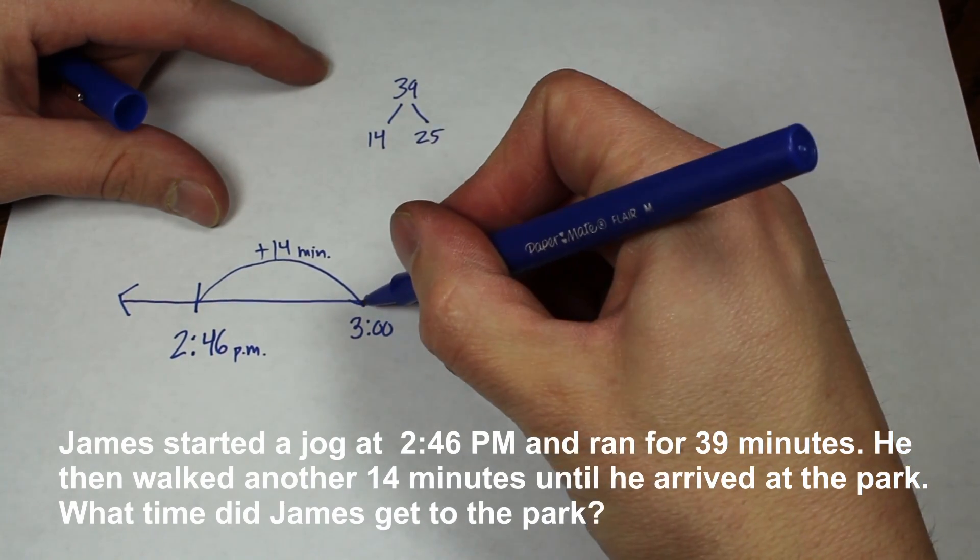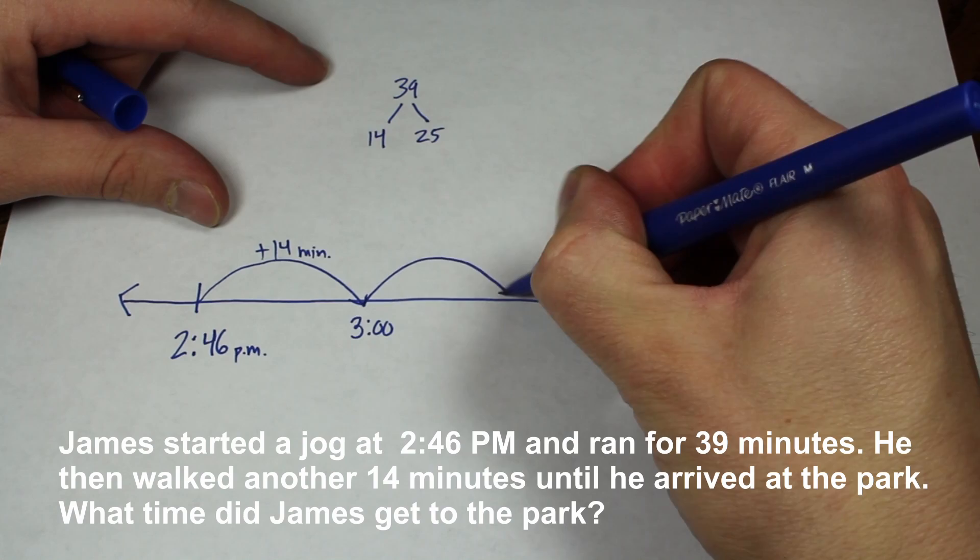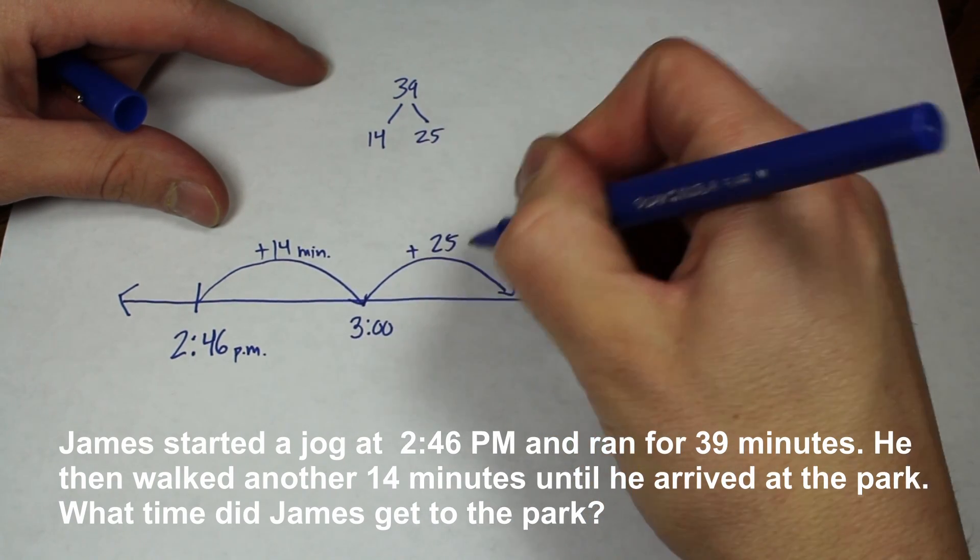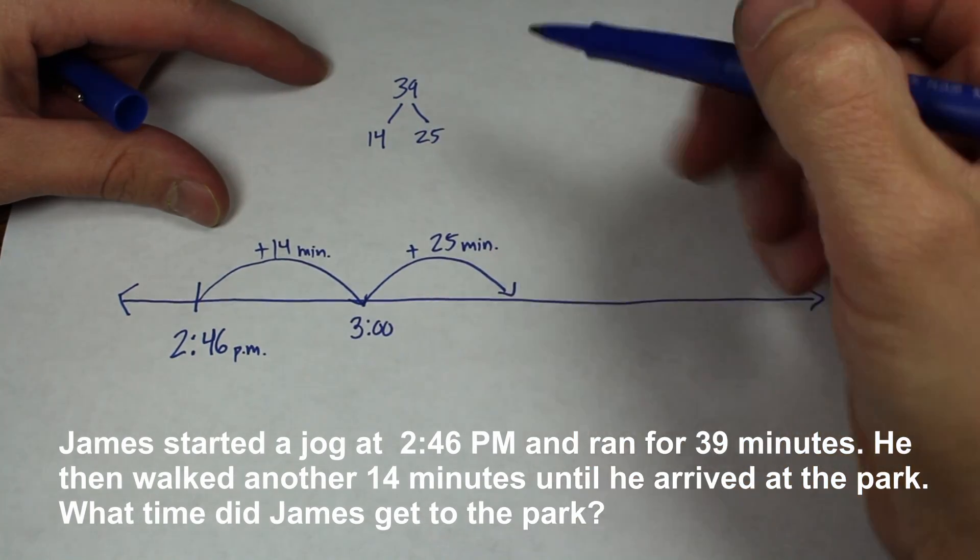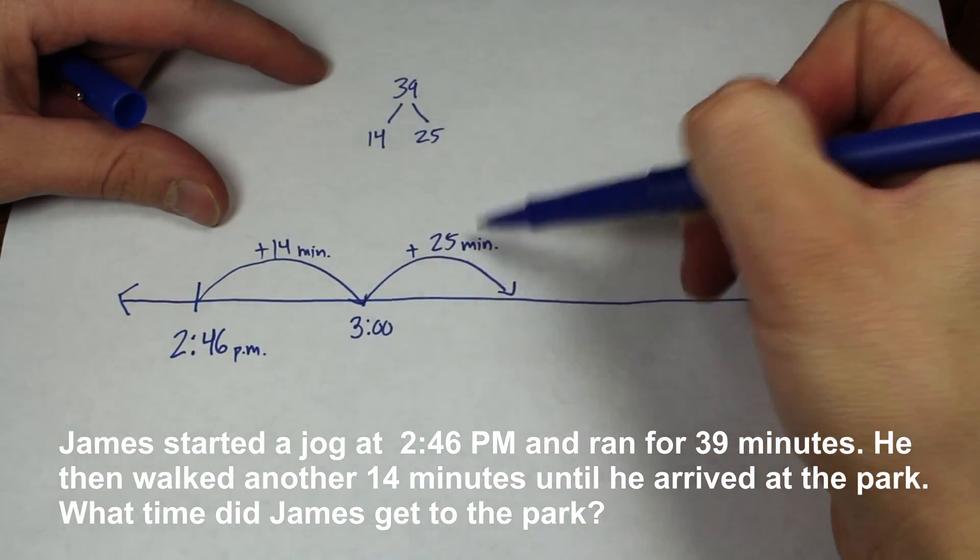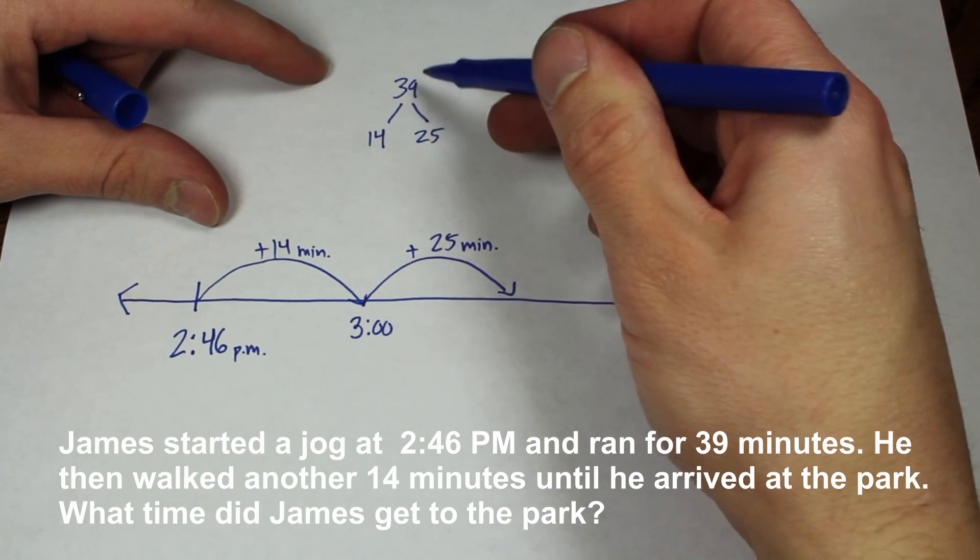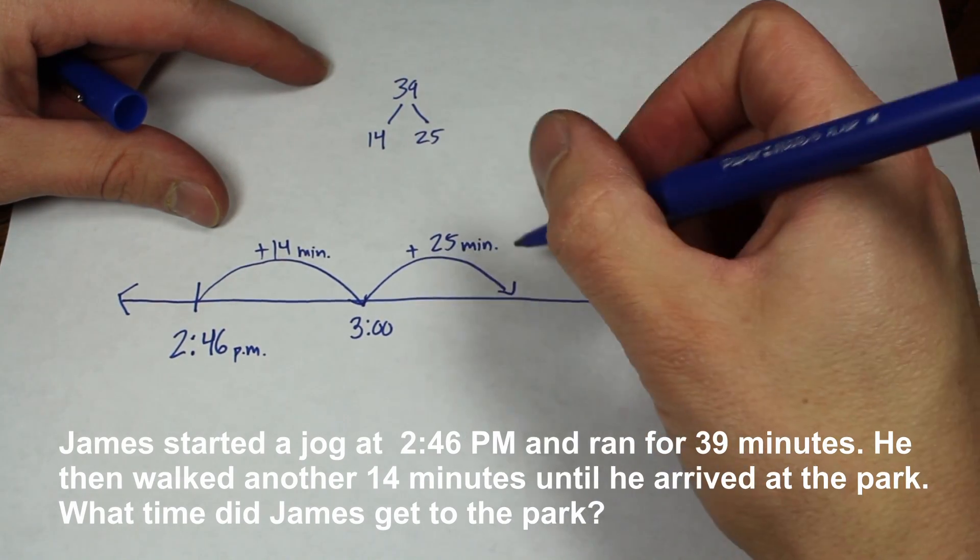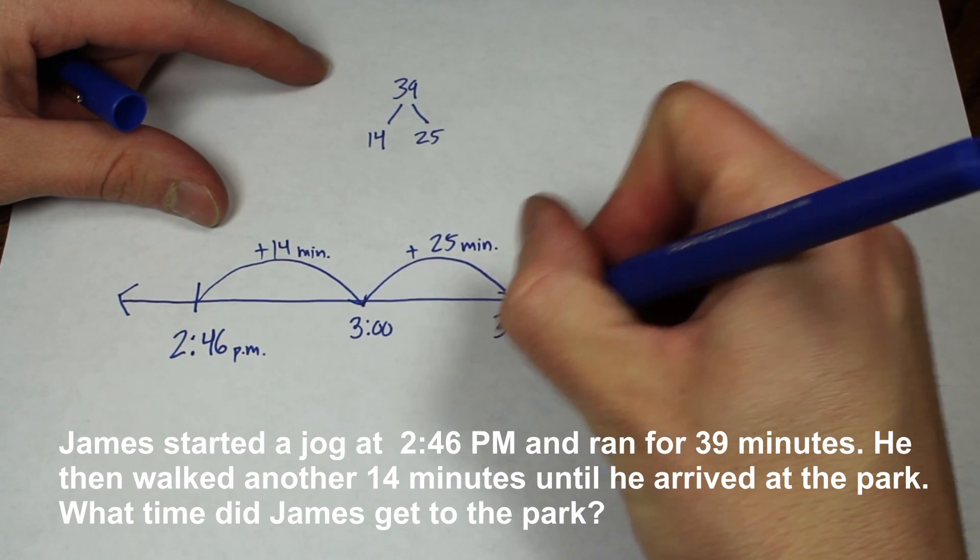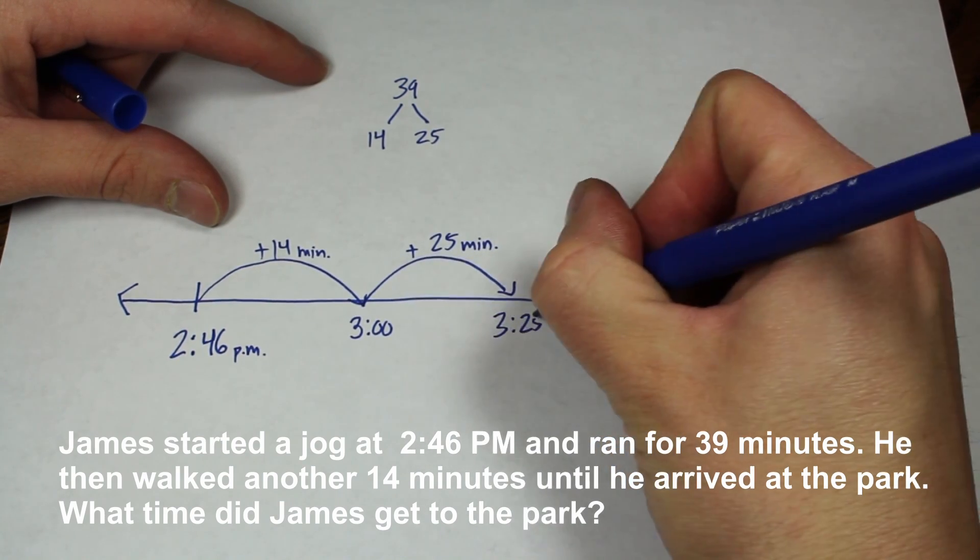So now we're going to go forward another 25 minutes. And I know these arrows aren't to scale, but that's okay. So we've got 14 and 25, and like I said, those two together give us our 39 minutes. So now we're sitting at 3:25.